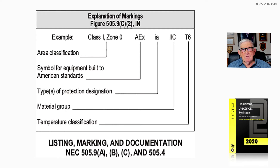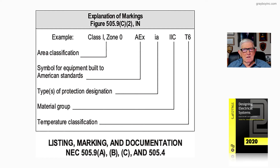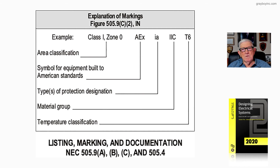Then the type of protection designation is IA. Remember we looked at all those types of equipment in 505 — I believe it's 505.9b. And notice the material group is 2C. We looked at the groups and compared 1C, 2C, 3C to our groups A, B, C, and D in the divisions.